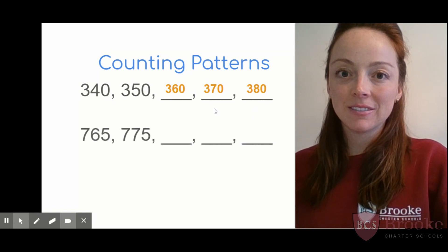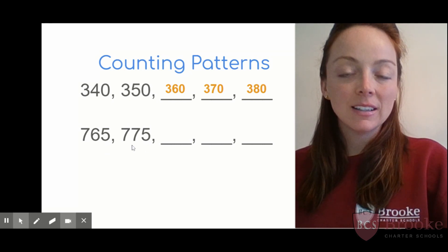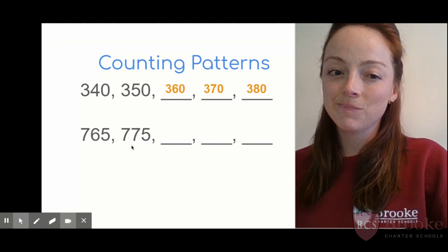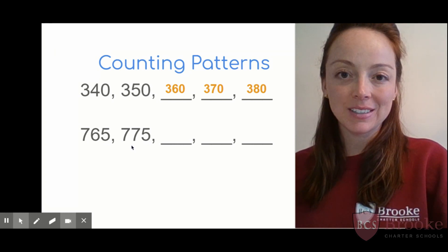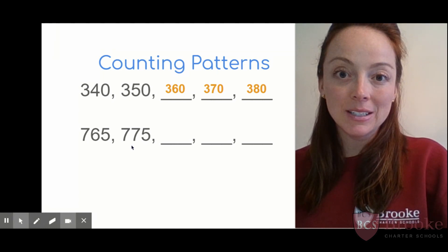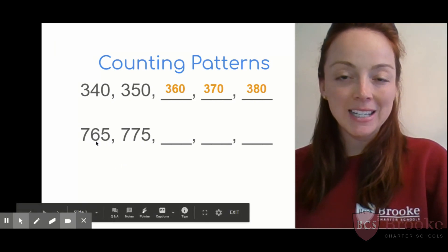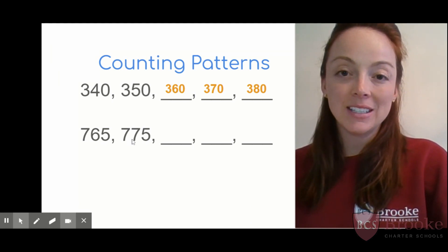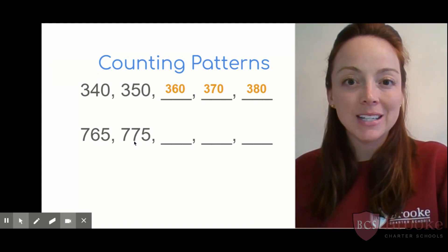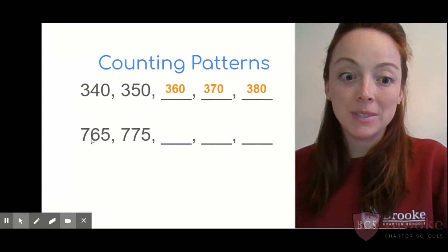Let's start by reading this pattern together. Our first number is? Good, 765. Next is? 775. Hmm, what's changing? The ones, the tens, or the hundreds? I agree, the tens place is changing. The fives stay the same in the ones place. And for now, the hundreds stay the same in the hundreds place. But in this number, 765, how many tens do I have? Right, six. And how many do I have in 775? Yeah, seven tens. Are we counting up by tens or down? I agree, the tens are getting bigger. We went from six tens to seven tens.